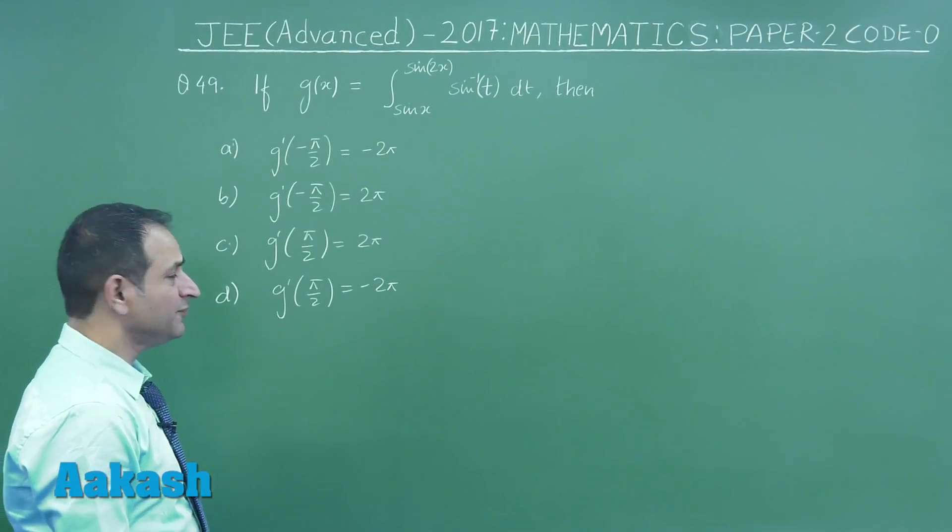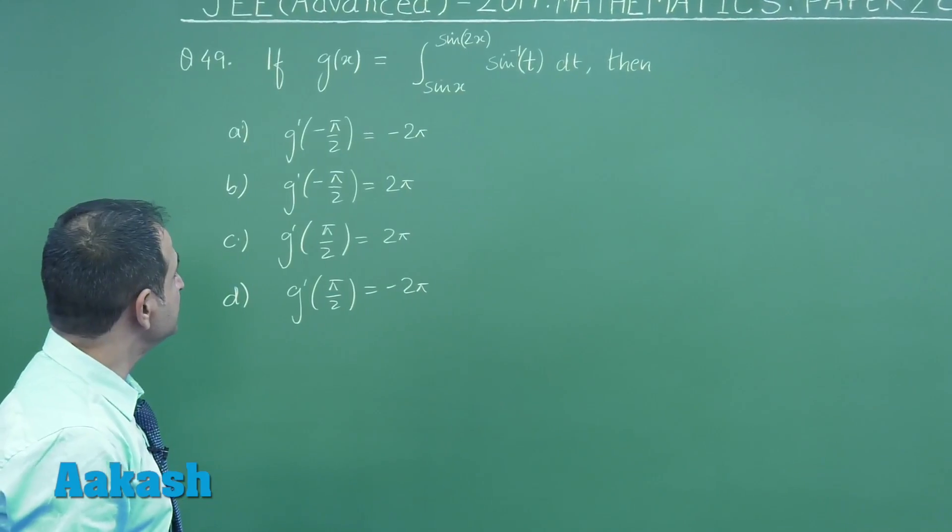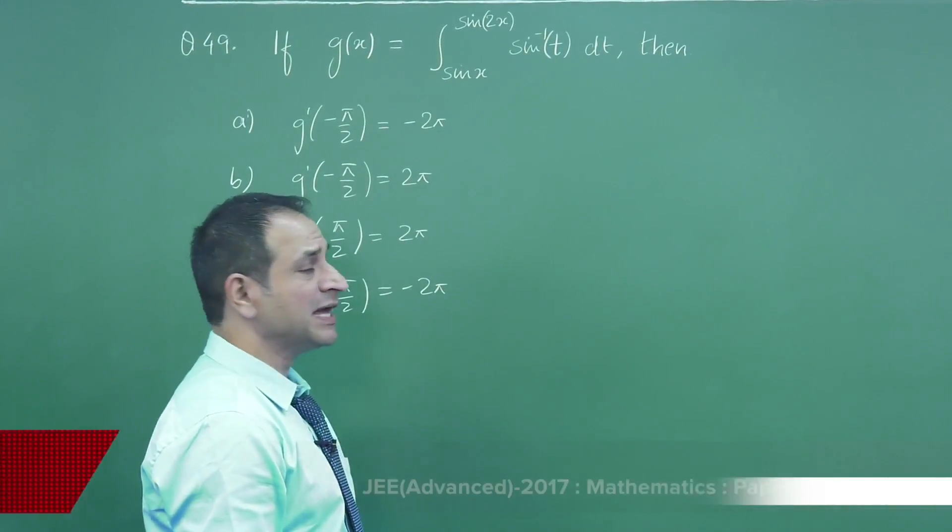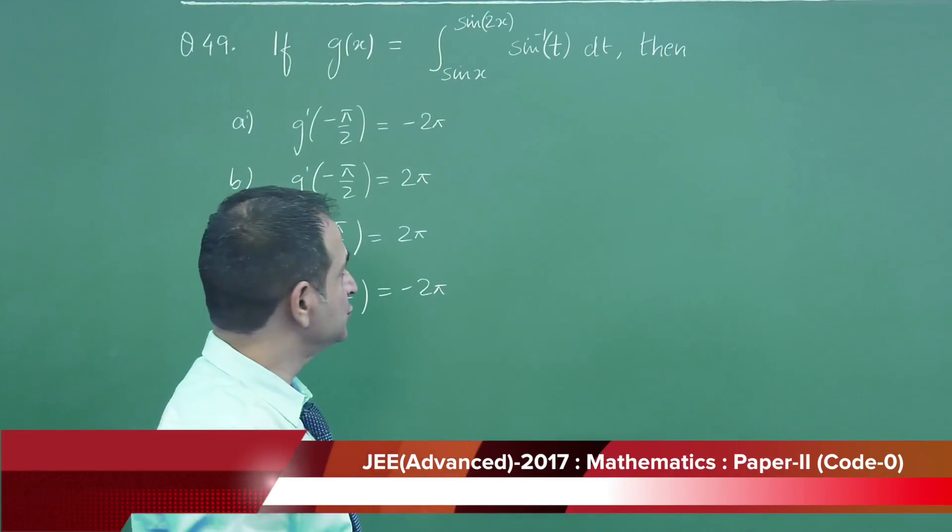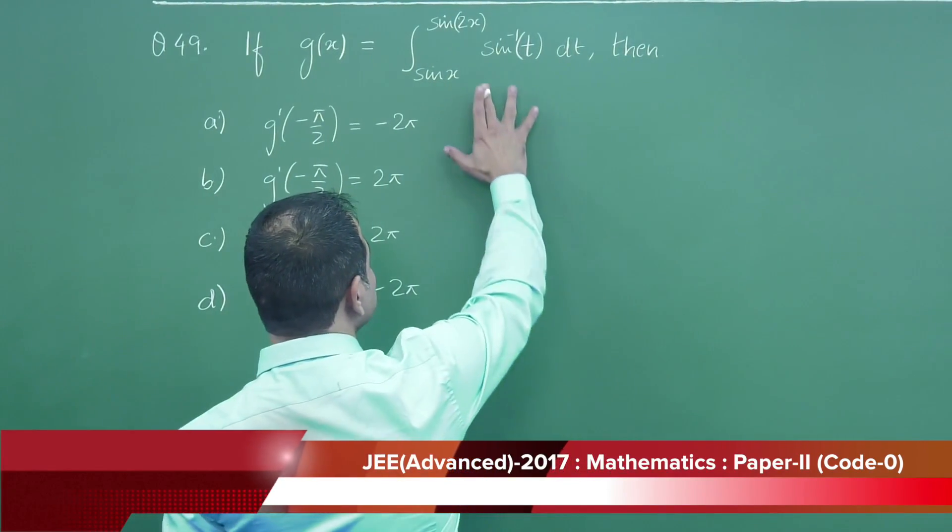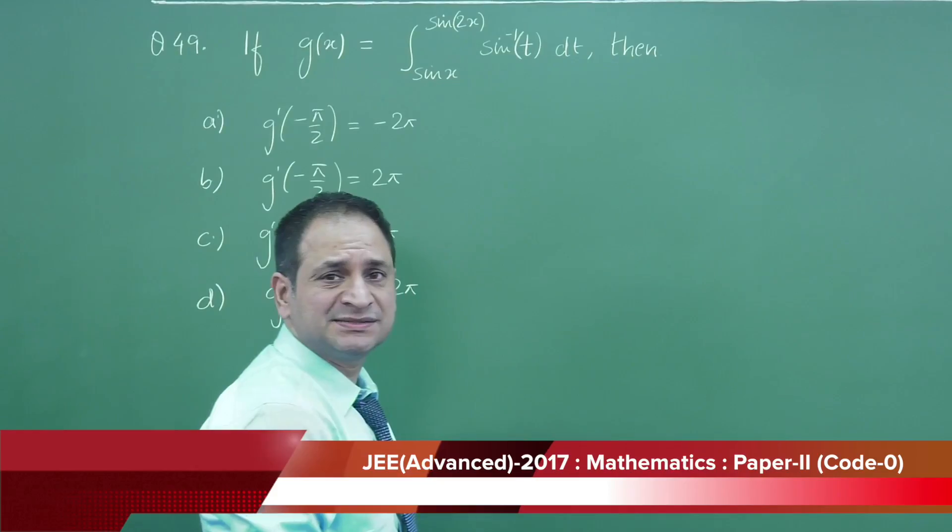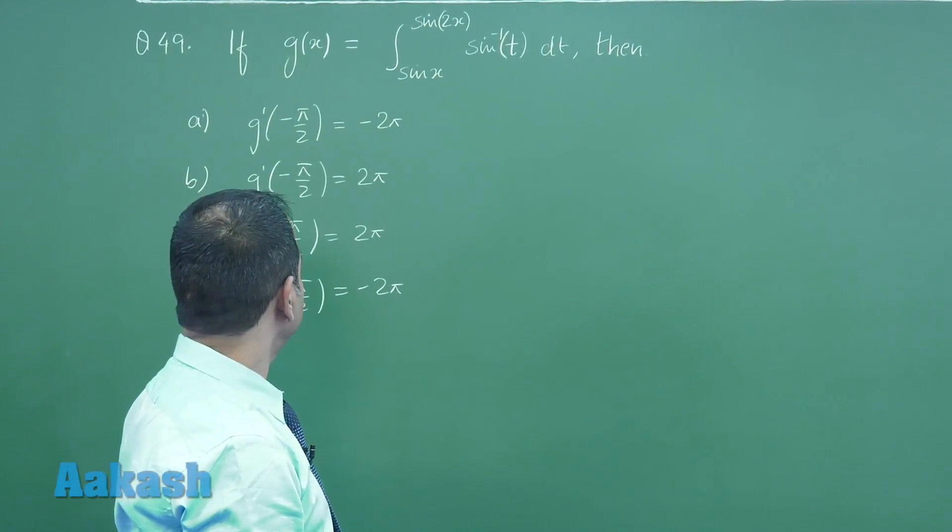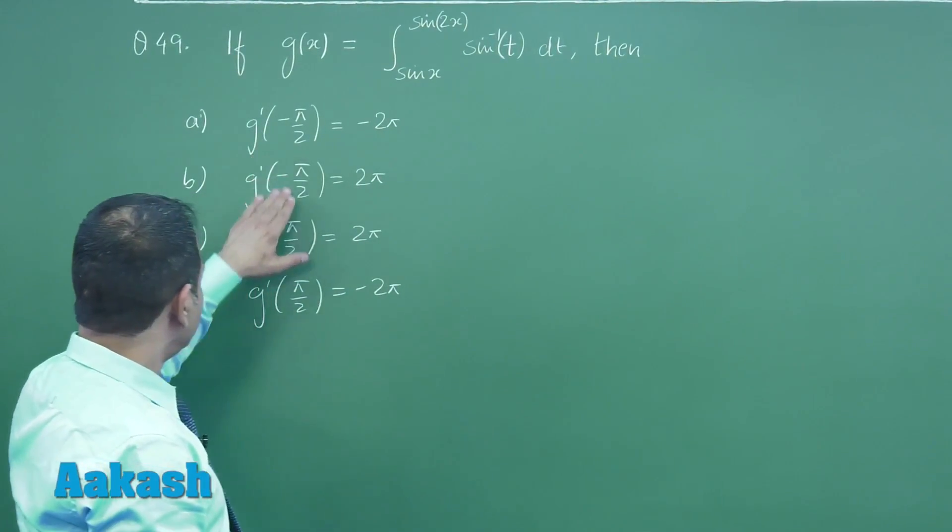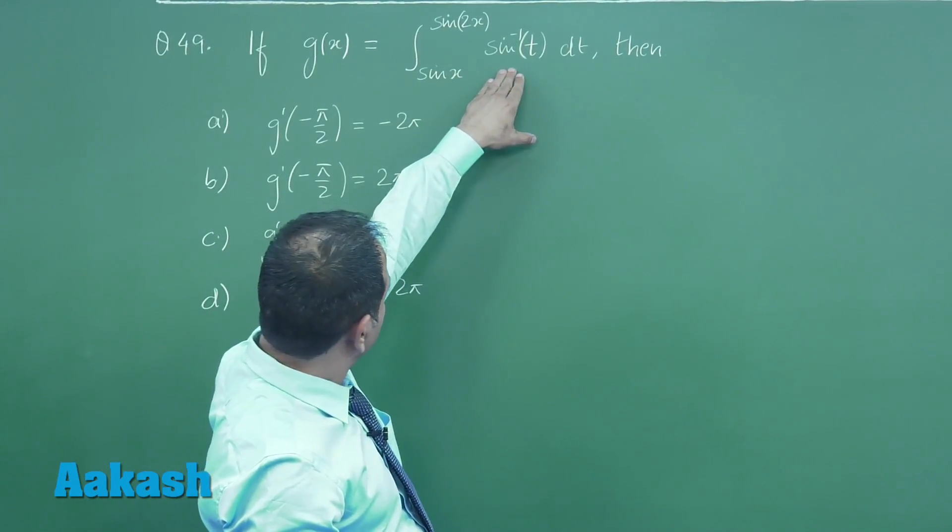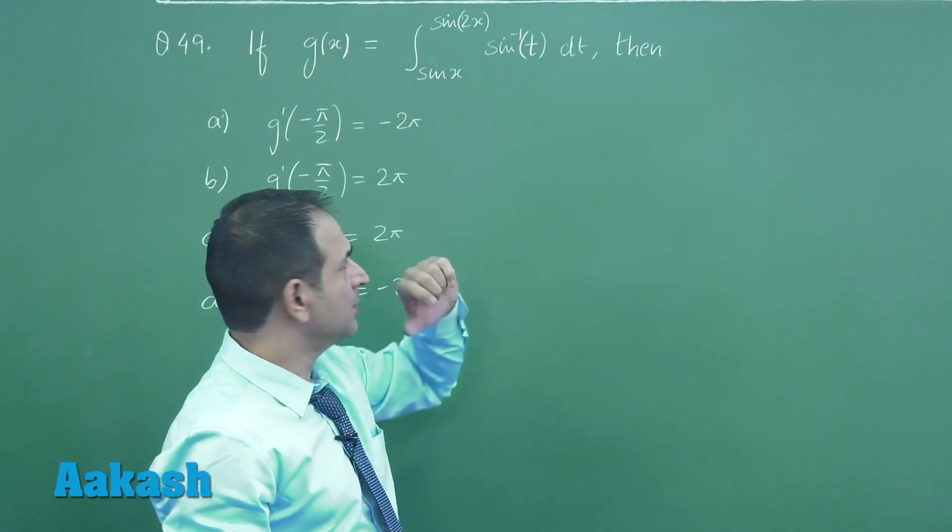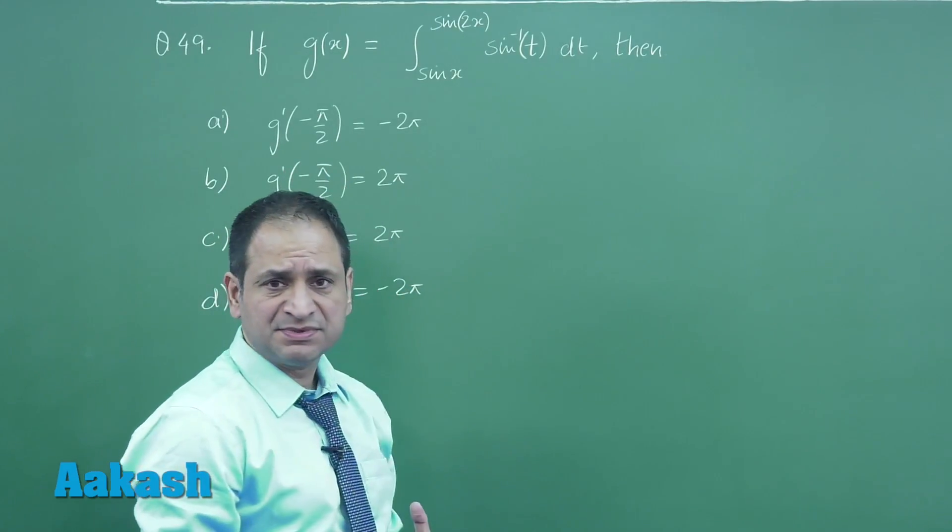Now let us look at question number 49. Here g(x) is given as the integral from sin x to sin 2x of sin inverse t with respect to t. But we want to find out the derivative, so it's not a lengthy one. We do not have to integrate this because there is a derivative which has been asked here.